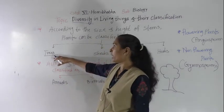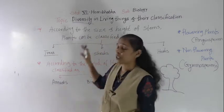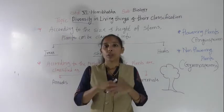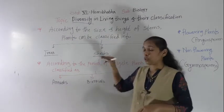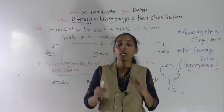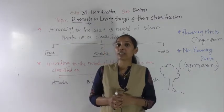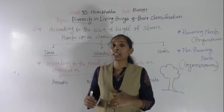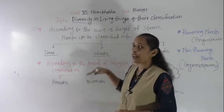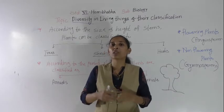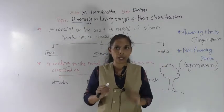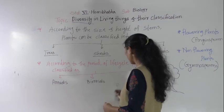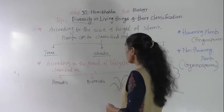This is the first category in the classification based on size and height. Now we will go through shrubs. Shrubs have a medium-size height, and an important feature is that shrubs have a brown stem but it is not as thick and hard as that of trees. The branches of the shrubs grow from near the ground — they are very close to the ground.